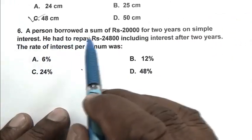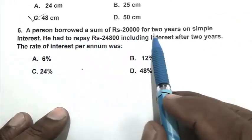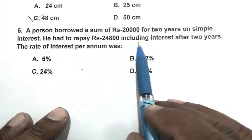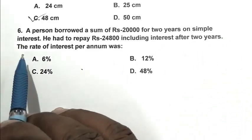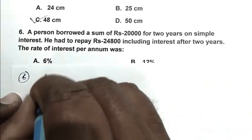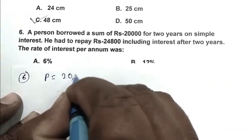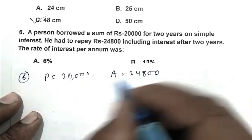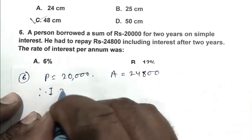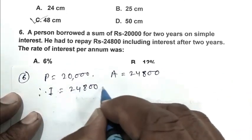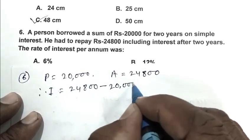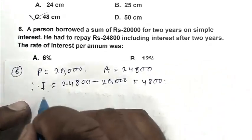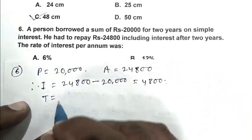Question number 6: A person borrowed a sum of rupees 20,000 for 2 years on simple interest. He had to repay rupees 24,800 including interest after 2 years. The rate of interest per annum was. Here principal 20,000, amount 24,800. Therefore interest 24,800 less 20,000, that is 4,800. Time 2 years.